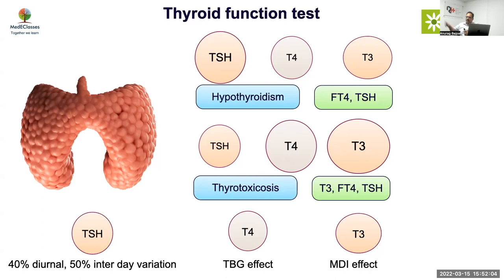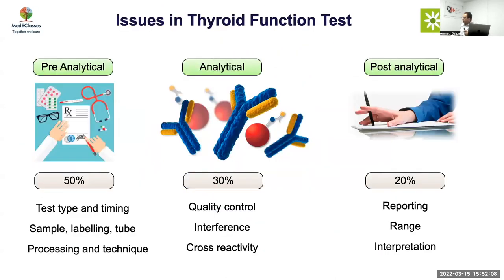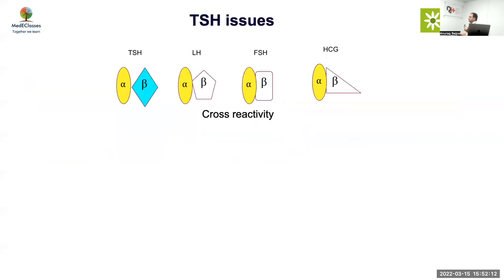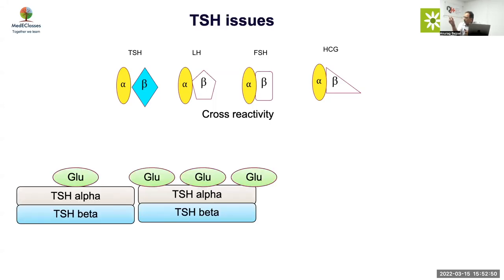Moving to analytical issues — what can be the problems with TSH assays? Cross-reactivity means structurally similar things can be measured. Sensitivity is how low you can measure; specificity is how well you differentiate between two analytes. Earlier assays had cross-reactivity problems, but modern assays don't usually cross-react with hCG as TSH, so that's less of an issue. The second major issue involves differences between TSH isoforms and how immunoassays measure them.